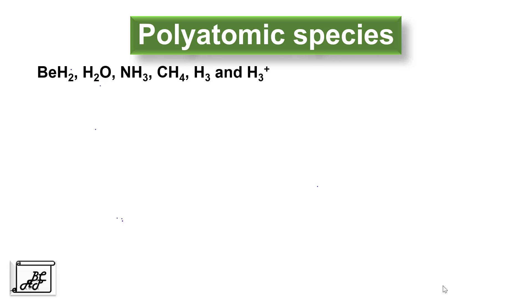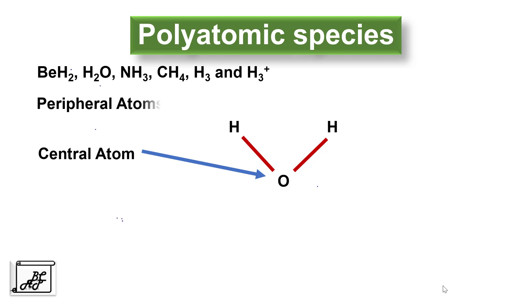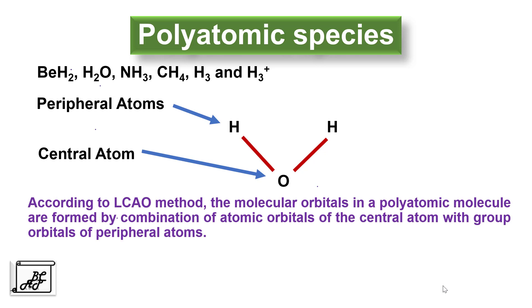In earlier videos, we have studied homonuclear diatomic molecules and heteronuclear diatomic molecules, where we considered atomic orbitals of two atoms. Here we have to consider, for example, the water molecule — there is one central atom and the other atoms are peripheral atoms. Oxygen is the central atom and the two hydrogen atoms are called peripheral atoms. In the case of polyatomic species, we apply the LCAO method — linear combination of atomic orbitals — according to which molecular orbitals are formed by the combination of atomic orbitals of the central atom with the group orbitals of peripheral atoms.